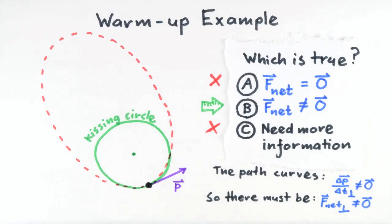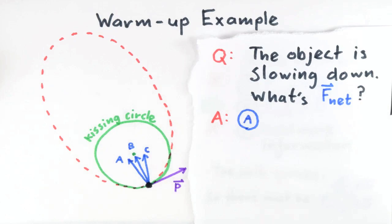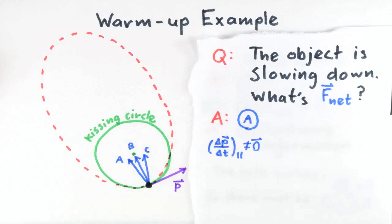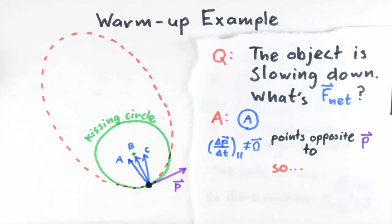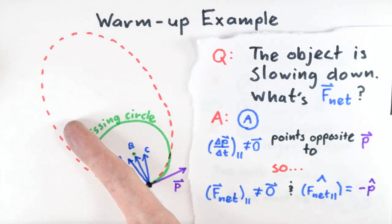Let's push this example one step further. Let's say at this instant we also observe the object is slowing down. Which of these arrows best represents the direction of F net? To answer this, we first need to determine the direction of F net parallel. From the observation, delta p over delta t parallel points opposite to the direction of the object's motion when the object is slowing down. By Newton's Second Law, there must be non-zero F net parallel pointing in the same direction. Putting all this together, F net perpendicular points toward the center of the kissing circle, and F net parallel points backward along the motion. So F net, which is the vector sum of these, must point in a combined direction. This is the correct choice.